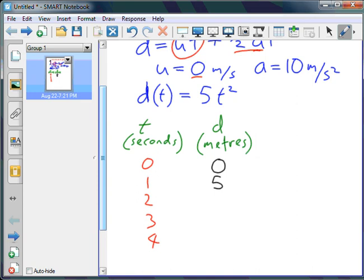Time T equals two seconds. Two times two equals four, times five equals twenty. After three seconds, the displacement will be three times three, that's nine multiplied by five, forty-five. And lastly, after four seconds, four fours are sixteen, times five equals eighty.